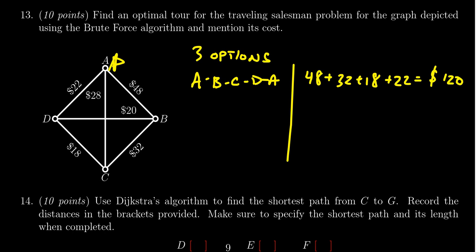Another option is we could go from A to B, then to D, then to C, then to A. You could also do that backwards: A to C to D to B to A, that's the same thing. If you do that one, you get a cost of 48 to go to B, then 20 to go to D, then 18 to go to C, then 28 to go back to A. That costs 114 dollars, so that one's a little bit better.